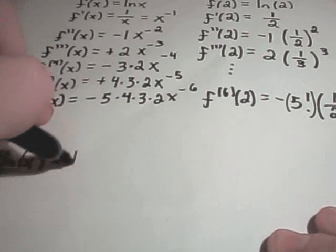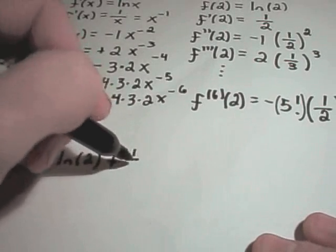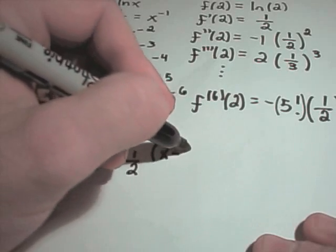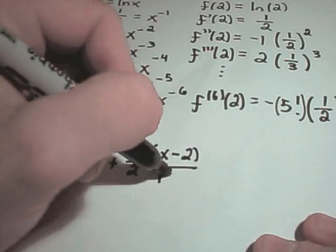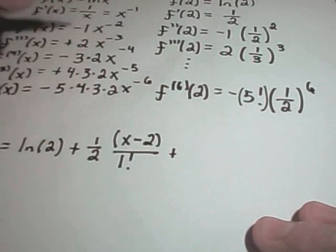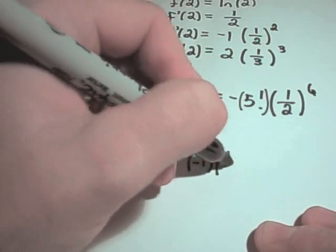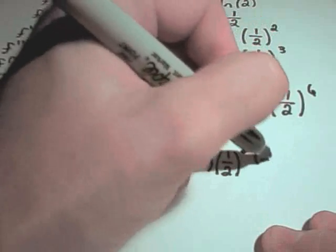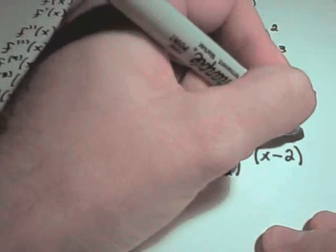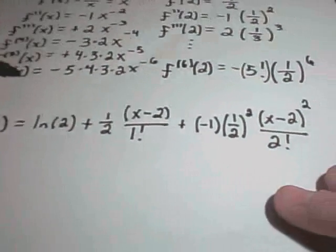So, what this simply says is, we can now actually write ln of x as, well, f of a, which is going to be ln of 2. So compare this to the formula I had at the very beginning. Plus, you'll have 1 half x minus a, which in this case is 2, over 1 factorial. Plus, f double prime of a, so that's going to be negative 1 times 1 half squared. And then we write x minus a, which again is 2. And, in this case, it'll be to the 2nd power over 2 factorial.